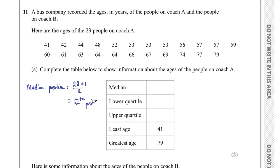Counting to the 12th position in the list gives 59. So 59 is the median age. The lower quartile is the first quarter — take the median position and divide by 2: 12 divided by 2 equals 6. Counting to the 6th position gives 53. That's the lower quartile.